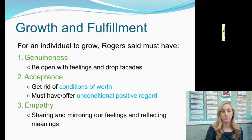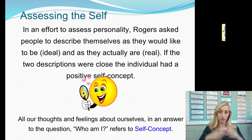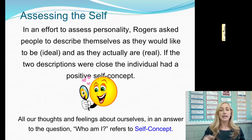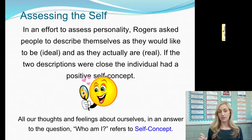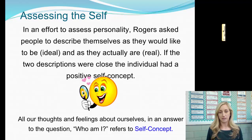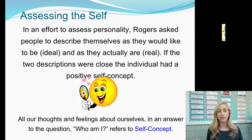So, assessing the self. In an effort to assess personality, Rogers asked people to describe themselves as they would like to be — their ideal self — and as they actually are — their real self. If the two descriptions were close, the individual had a positive self-concept. If there were lots of differences — for example, 'my real self is I'm okay at school, but my ideal self is I'm top of my class' — then we don't have that positive self-concept. All of our thoughts and feelings about ourselves in answer to the question 'Who am I?' refers to self-concept. This is how humanists assess personality: by assessing one's self-concept.